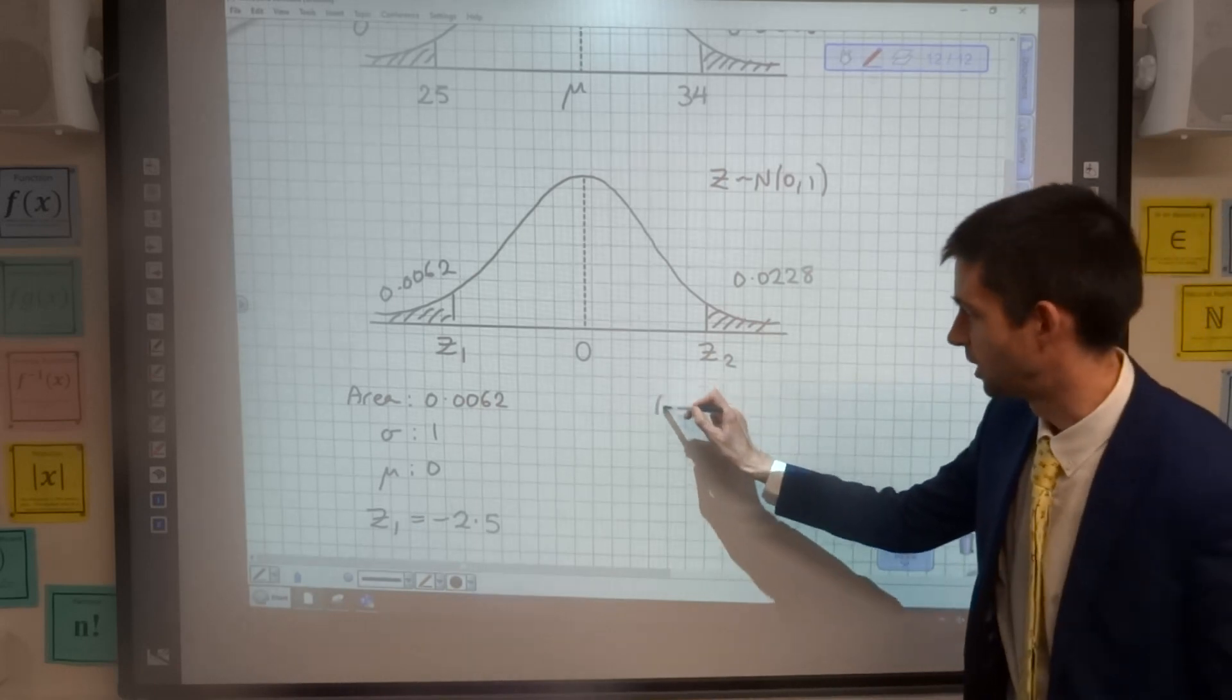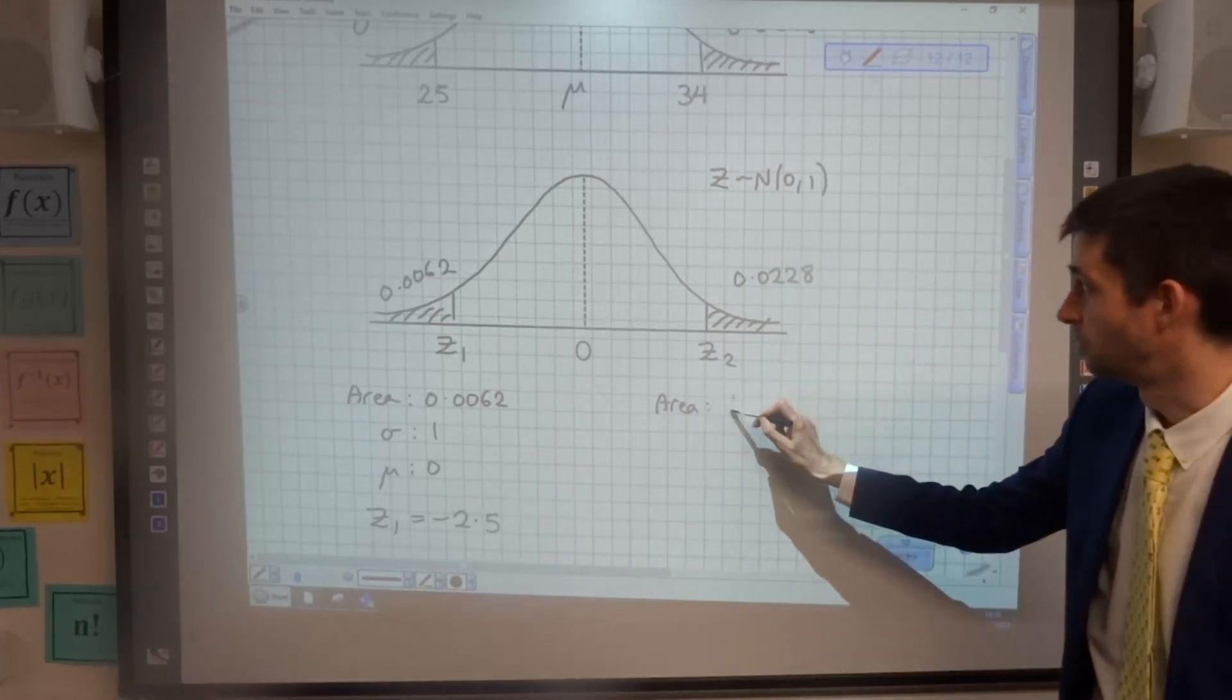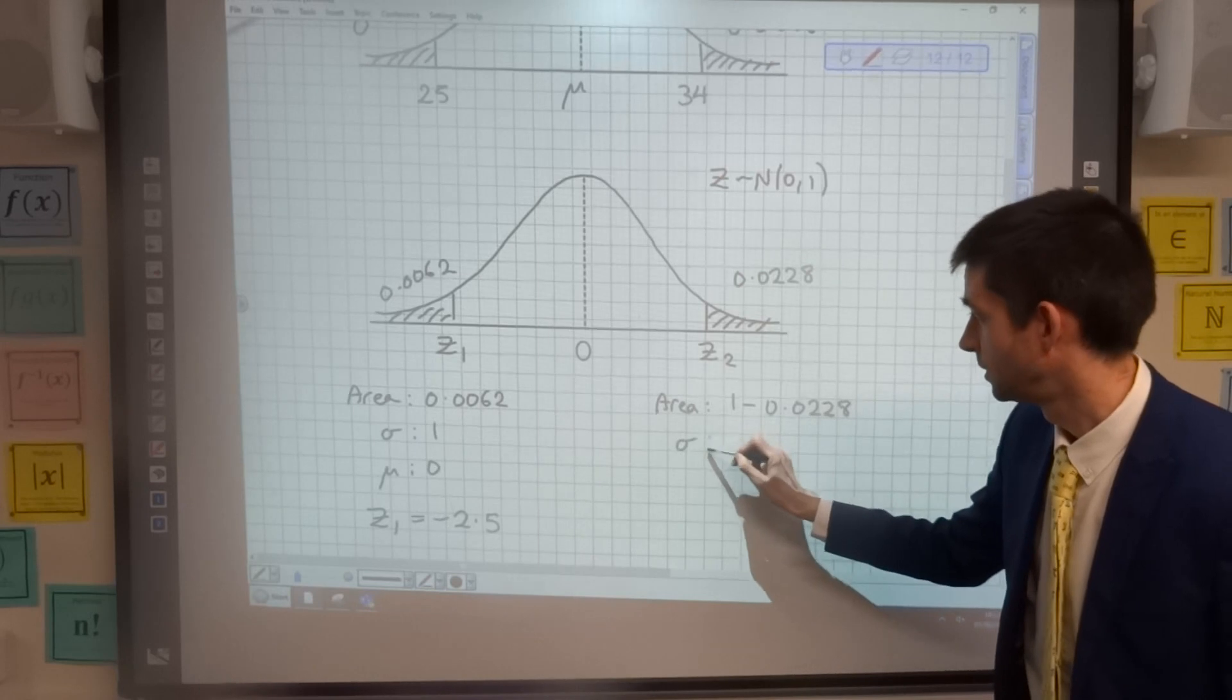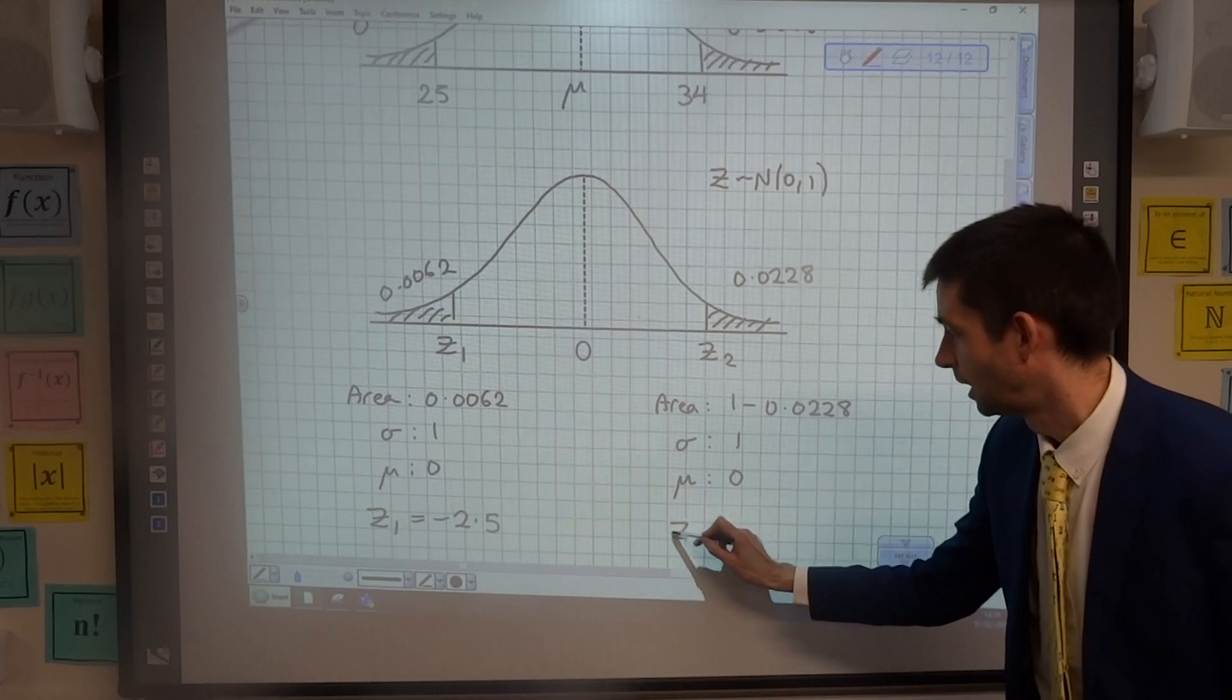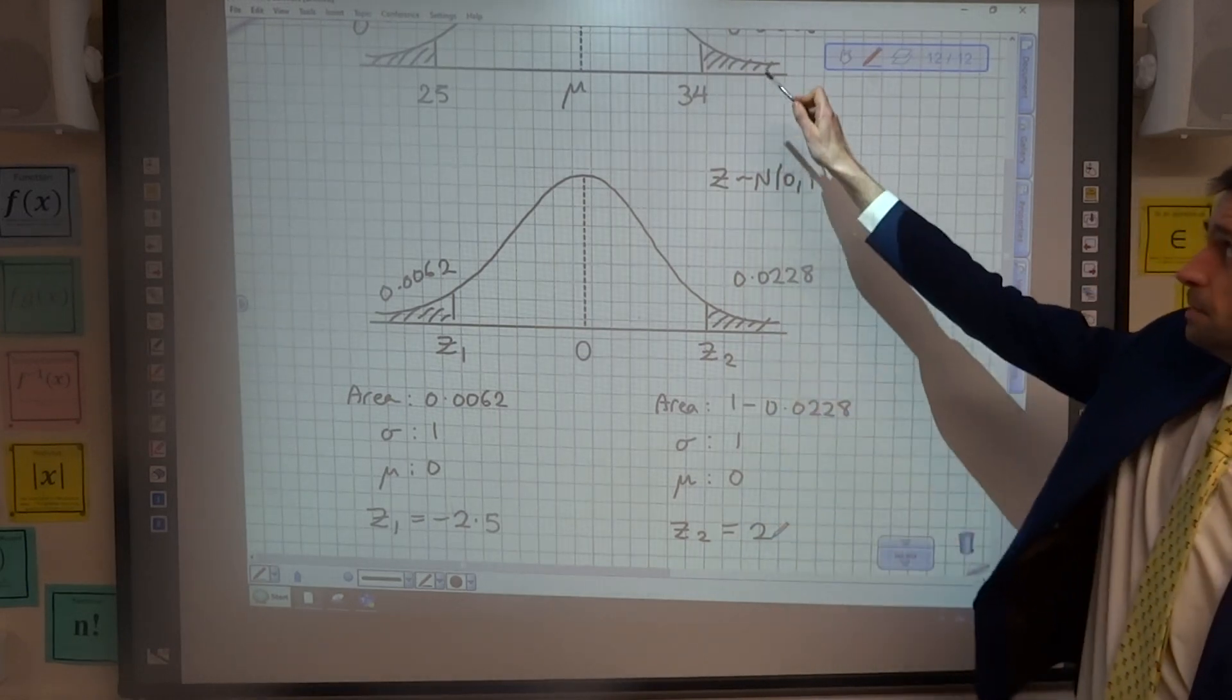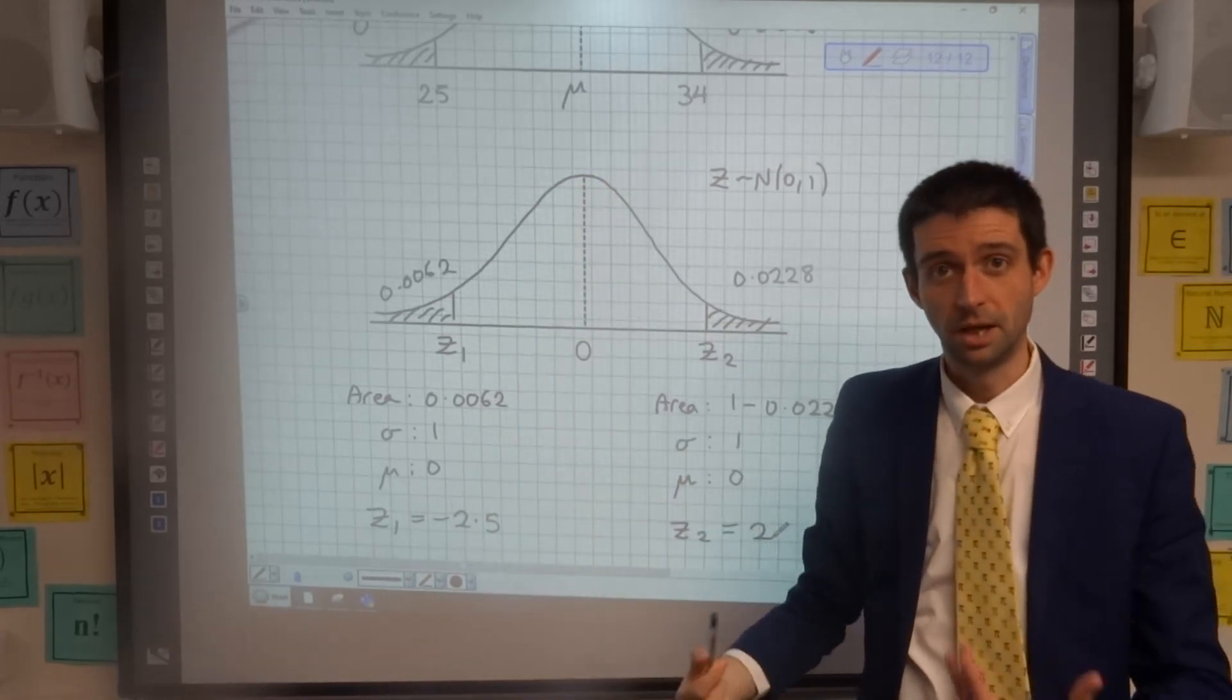What I'm going to do now is work on z2. Remember that the area when you're using the inverse normal has to be to the left of the line, so I'm not going to put in 0.0228—I'm going to put in 1 minus 0.0228. Standard deviation is still 1, mean is still 0, and that tells me that z2 is 2. So I'm two standard deviations above the mean here, meaning that 34 is 2 standard deviations above this mean, and 25 is 2.5 standard deviations below the mean.